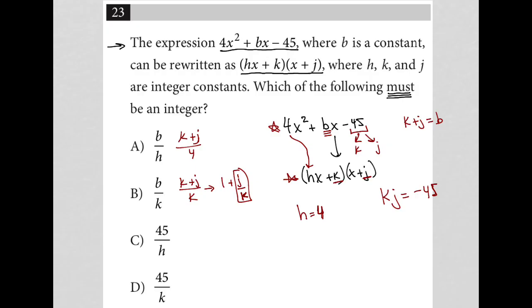And then for choice C, 45 over h, well, that's 45 over 4. So I do know that one. That's definitely not going to be an integer.